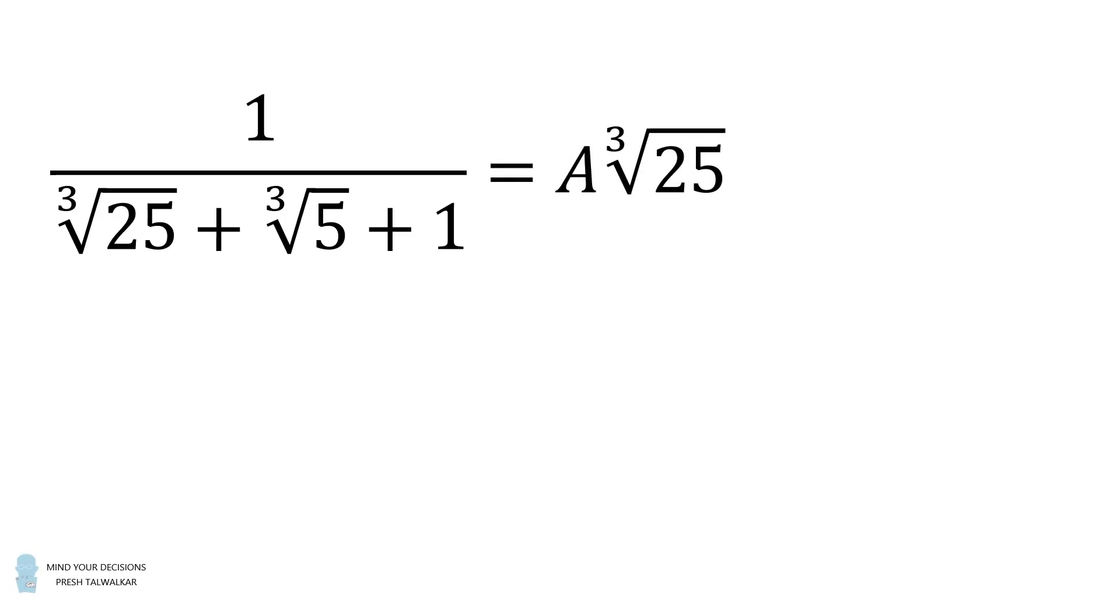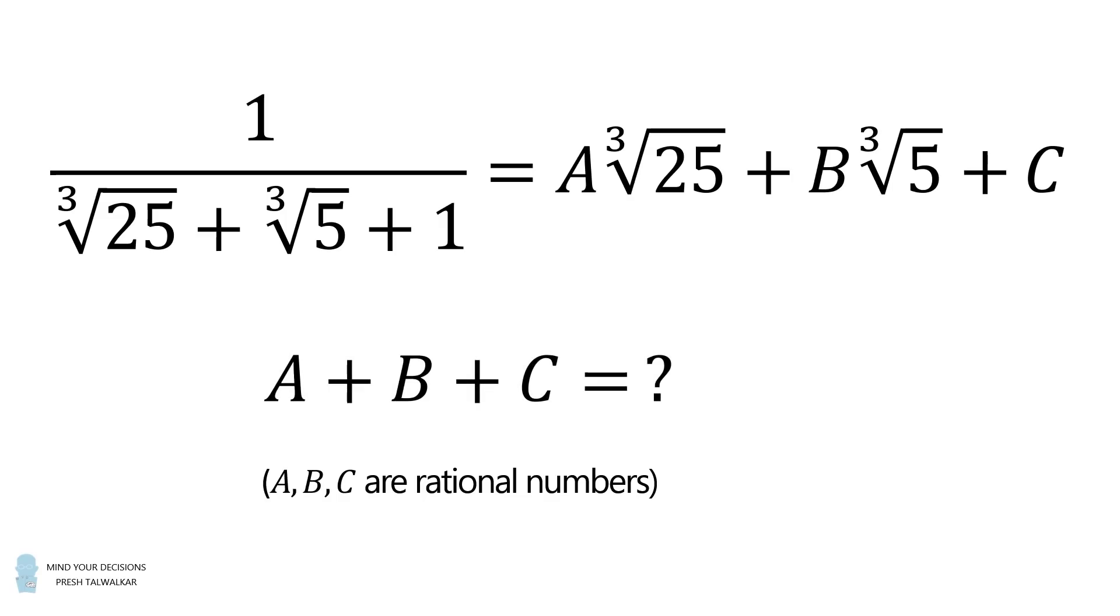Hey, this is Presh Talwalkar. 1 divided by the cube root of 25 plus the cube root of 5 plus 1 is equal to a times the cube root of 25 plus b times the cube root of 5 plus c. If a, b, and c are rational numbers, what is the sum of a, b, and c?